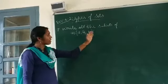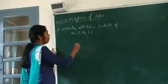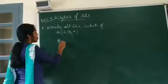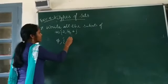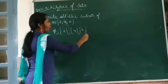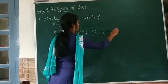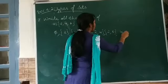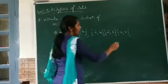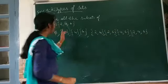Now, question 7: write all the subsets of {2, 4, 6}. First of all, we know that Ø is a subset of every set. Therefore, Ø is a subset of this set also. Now, splitting the elements: {2}, {4}, {6}. By taking two elements each: {2, 4}, {2, 6}, {4, 6}. And we know that every set is a subset of itself. Therefore, {2, 4, 6}. So these are all the subsets of the given set {2, 4, 6}.